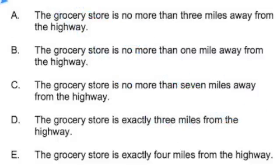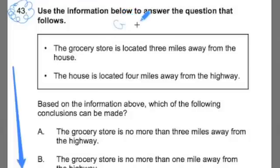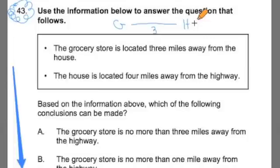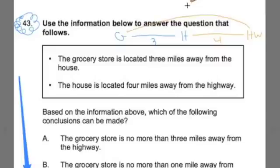Now before I go through ways to solve this, let's just take a moment and organize the information that's given in the box. That way we can look back, eliminate the ones that don't make sense, and really be confident with our answer choice. So I'm going to start with this first sentence: the grocery store is located three miles away from the house. I'm going to create a quick model drawing. I'll put the grocery store here, draw a little line here, and potentially this could be the house. And that's three miles. Then it says the house is located four miles away from the highway. So the highway could be located here — and that would be four miles. So in total, it's possible that the grocery store and the highway, in total, are going to be seven miles apart.